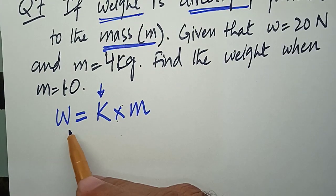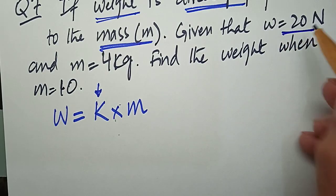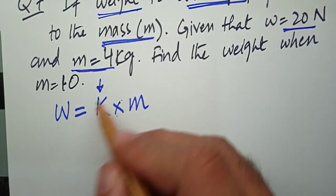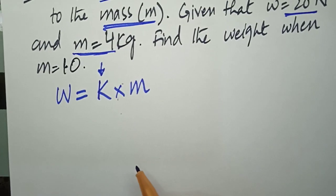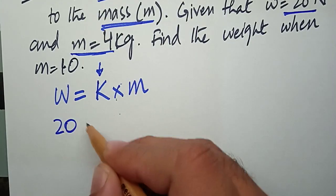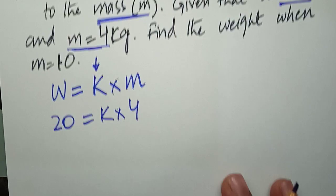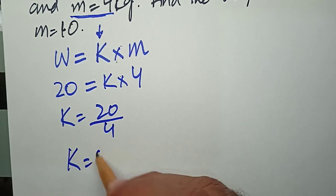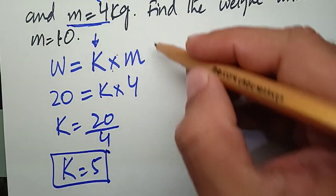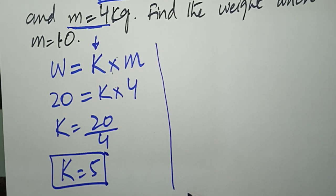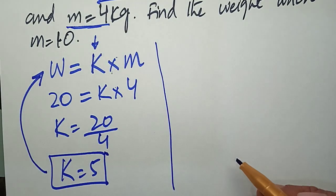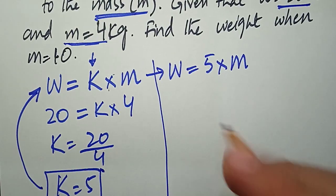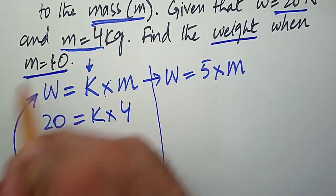When two quantities are directly proportional, there is a constant value k relating both quantities. The weight is 20 newtons and the mass is 4 kg, so we can find k: 20 equals k times 4, so k equals 20 divided by 4, which is 5. We substitute k equals 5 into the equation: W equals 5 times M.